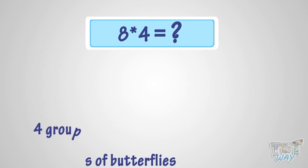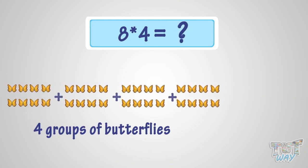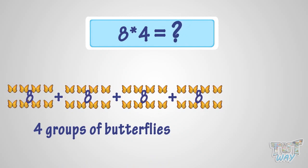What is 8 multiplied with 4? It is the same as four groups of 8 butterflies. So it is 32 butterflies. That is, 8 multiplied by 4 is 32.